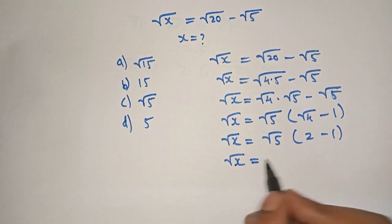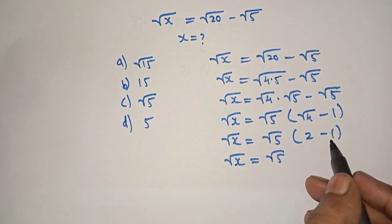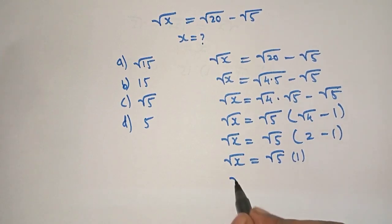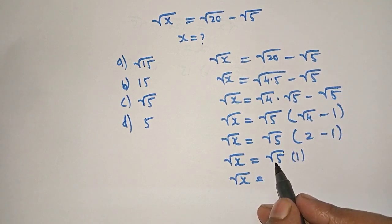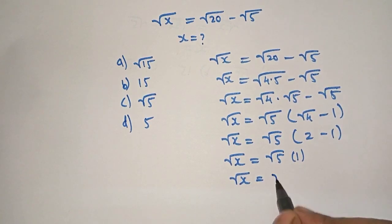Square root of x equals square root of 5. 2 minus 1 is what? 1. Therefore, square root of x, square root of 5 times 1 is what? Square root of 5.